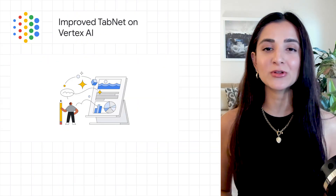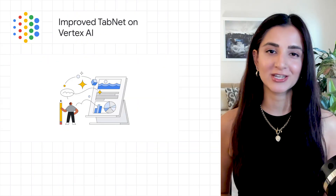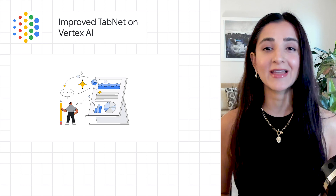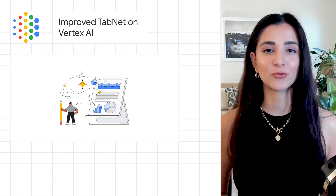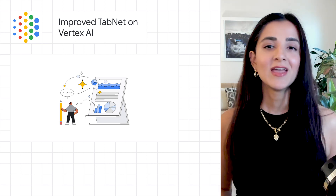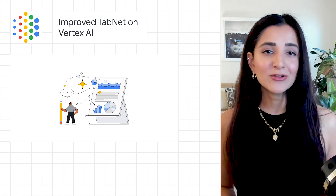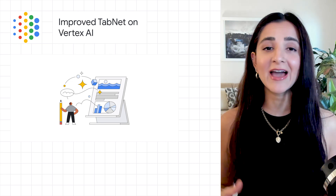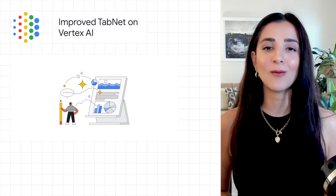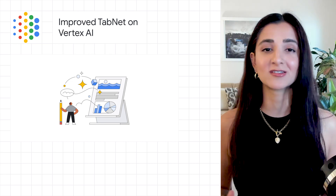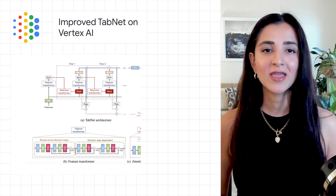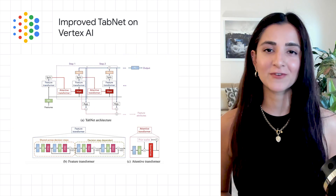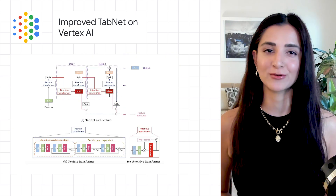TabNet is an interpretable deep learning architecture developed by Google AI that combines the best of both worlds. It's explainable, like simpler tree-based models, but can achieve the high accuracy of complex black box models and ensembles. TabNet is now available in Vertex AI Tabular Workflows.